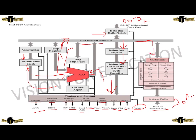The Intel data bus is connected to the multiplexer, which is a register selector for writing temporary and register data. The multiplexer consists of registers W, Z, B, C, D, E, H, and L, stack registers, stack pointer, program pointer, address latch, and is connected to the address buffer. The address buffer produces the output.